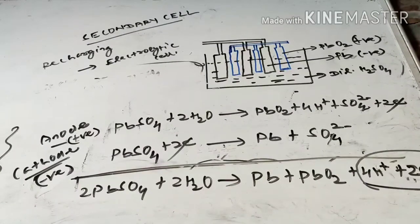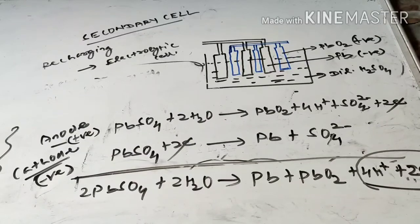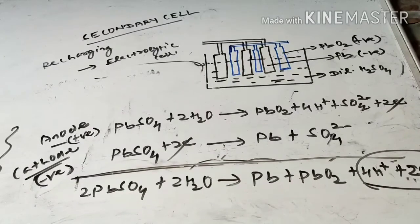Nowadays we convert the electrodes into lead-calcium alloy. Why? Because using lead-calcium alloy prevents the electrolysis of water, so water will not evaporate or be removed from the cell as hydrogen and oxygen gas. For that reason, in modern vehicle batteries, we do not add water to them. This is one of the secondary cells I described, and it is called a rechargeable cell because after recharging it, we can use it again. In the next class, I will tell about the fuel cell. Thank you.